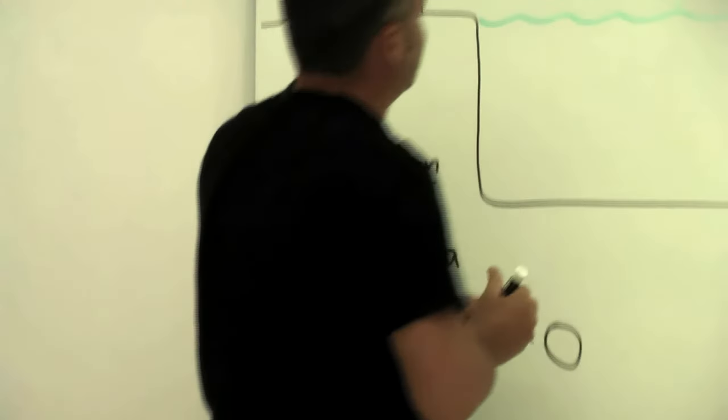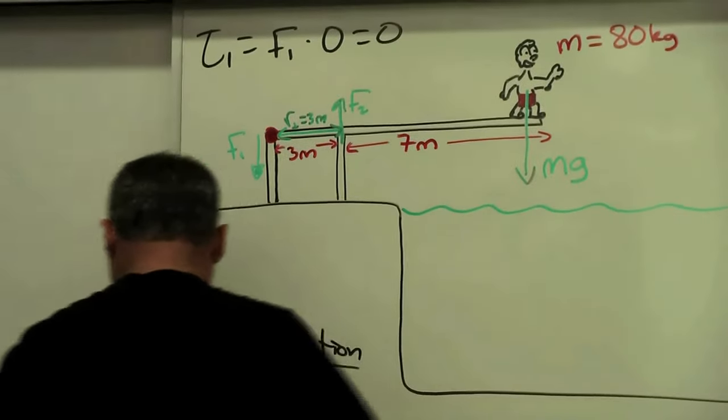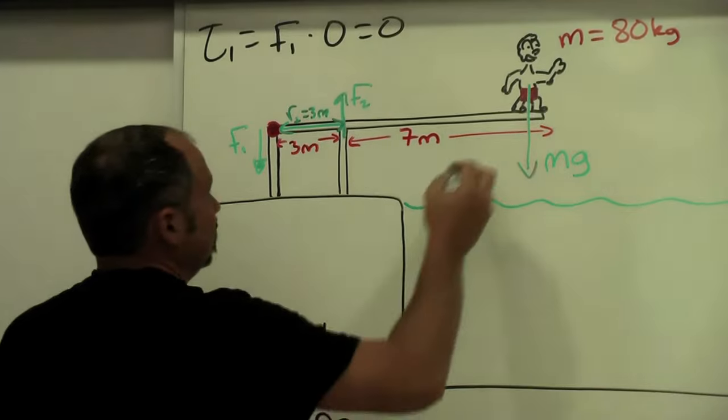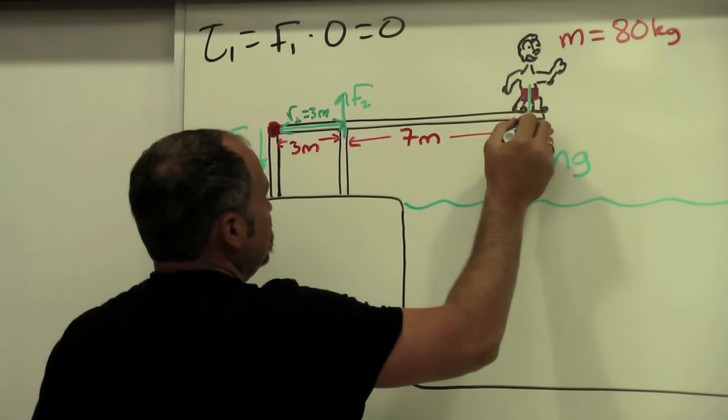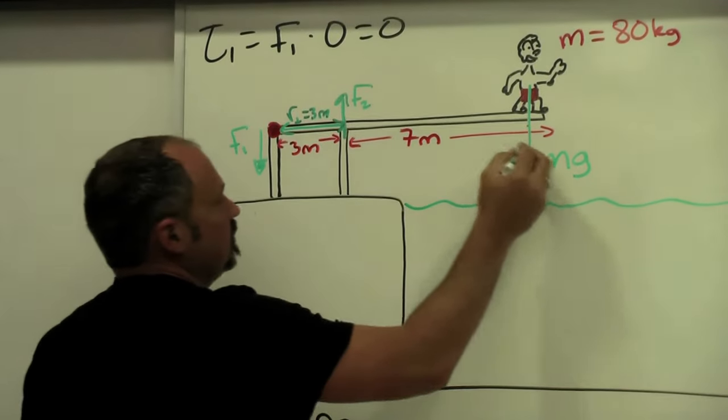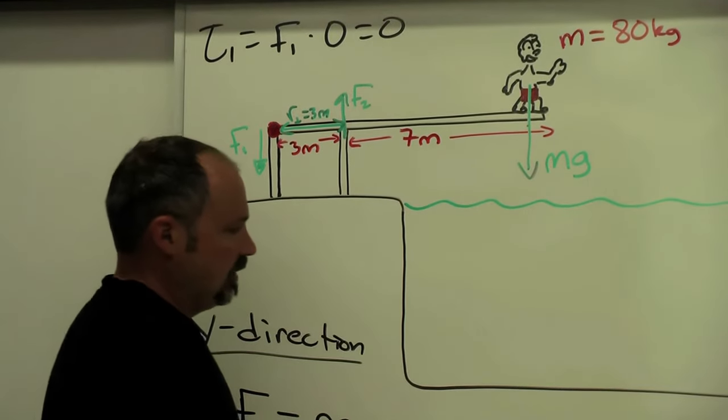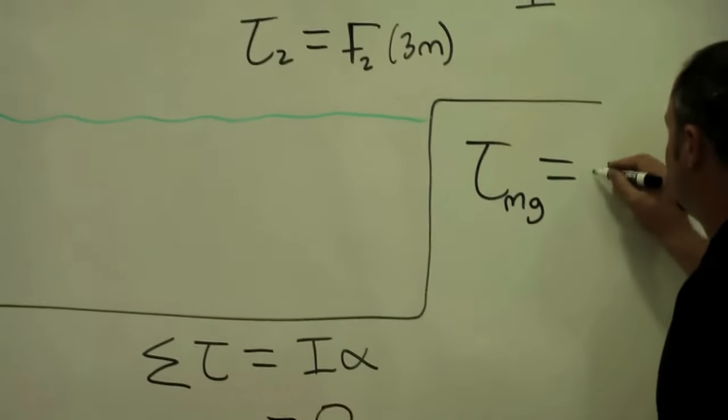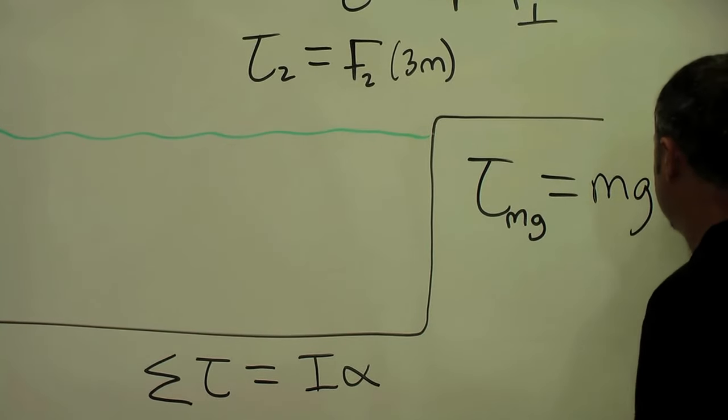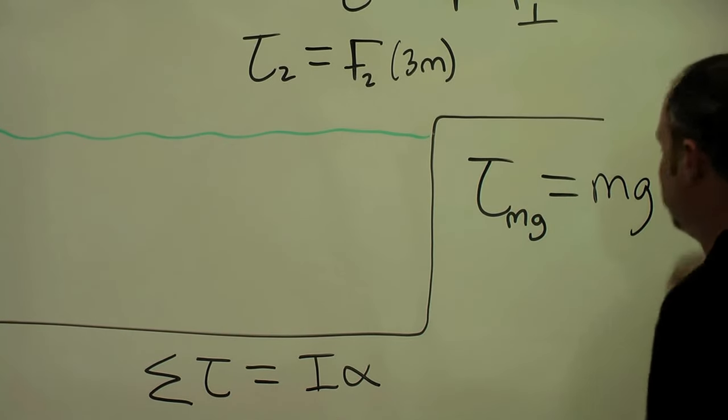So for this guy the perpendicular distance, well it's this distance here, it's seven meters plus three meters, so it's ten meters. So we can write that in here: torque from the weight of the man at the end, and then that's just mg times ten meters.